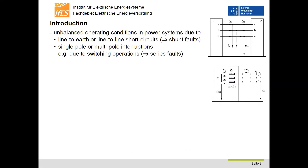In power systems, unbalanced operating conditions can occur, for example due to line-to-earth or line-to-line short circuits, which will be called shunt faults in the following, and single-pole or multipole interruptions, which result for example due to switching operations, and which will be called series faults.